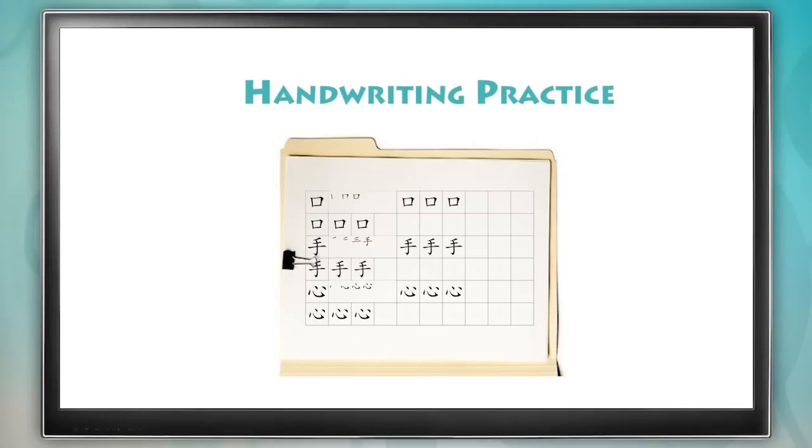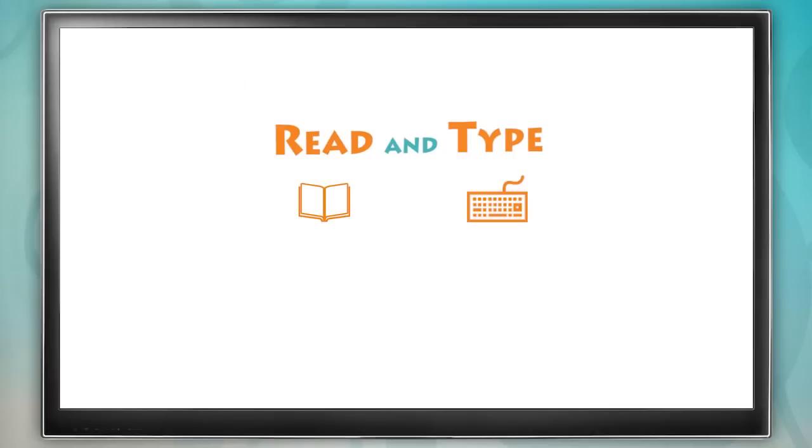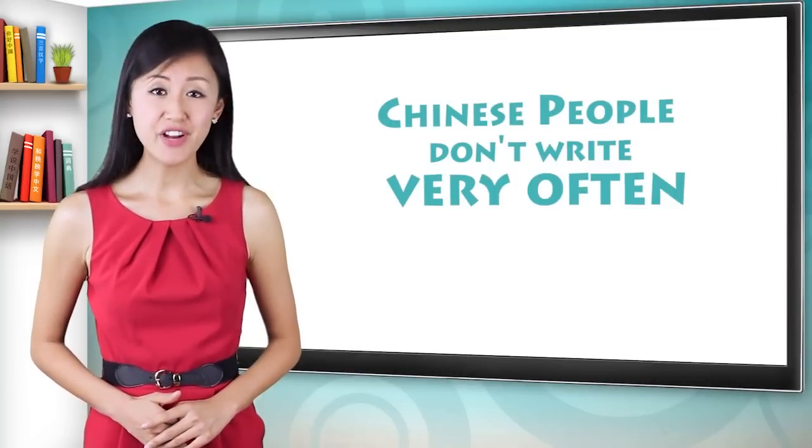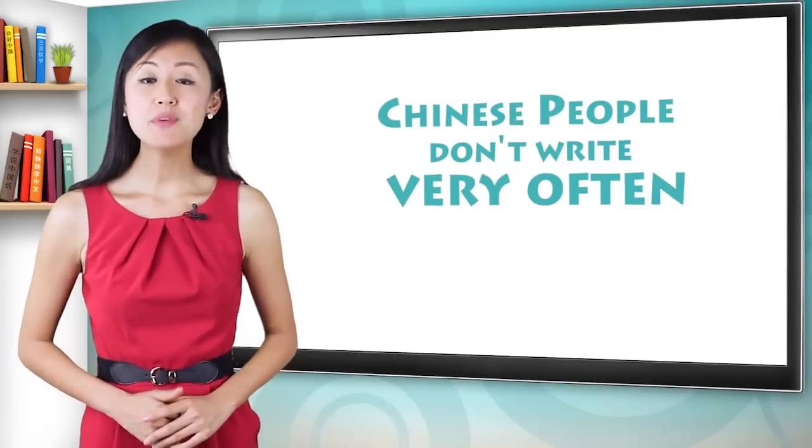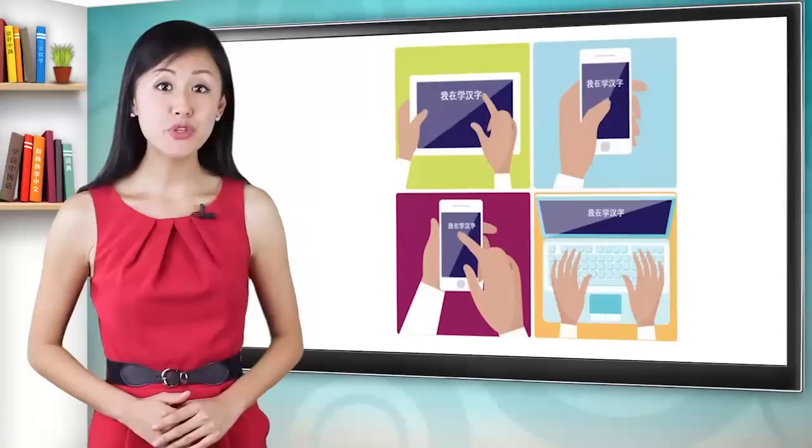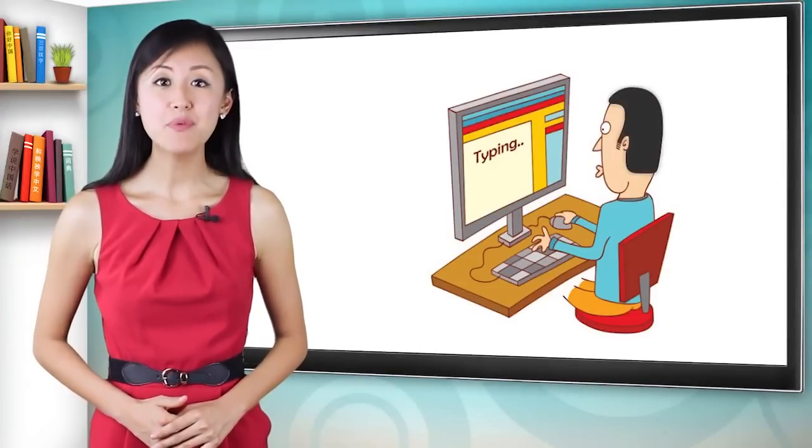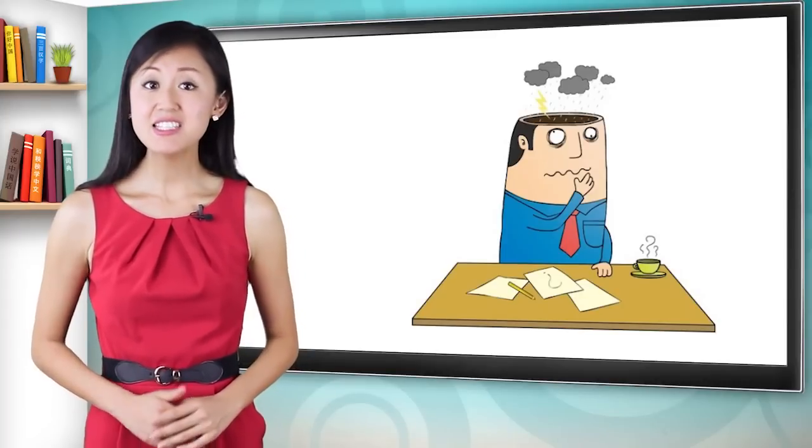But for most people, learning how to read and type is all you need to know. Even Chinese people don't write characters by hand very often these days. Almost all writing is done on a computer or device. So Chinese people can often read and type really well, but they are losing their ability to write Chinese by hand. It's not uncommon for a Chinese person to completely forget how to write a character.